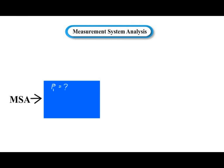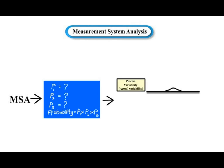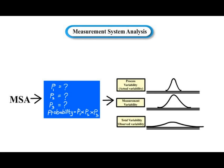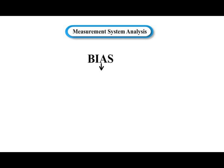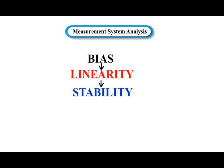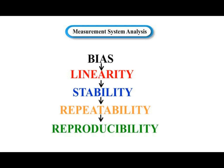Measurement System Analysis is an experimental and mathematical method of determining how much the variation within the measurement process contributes to overall process variability. There are five parameters to investigate in an MSA: bias, linearity, stability, repeatability, and reproducibility.